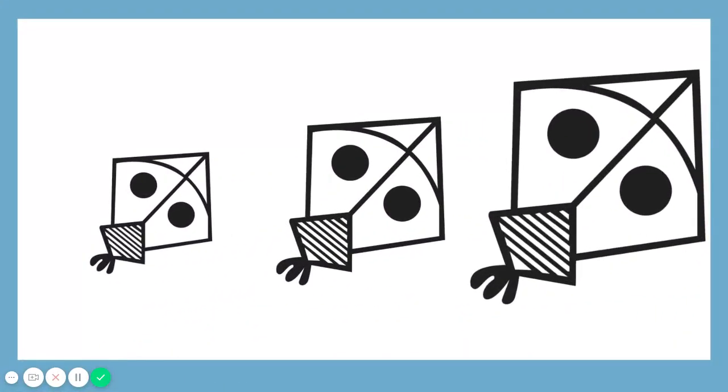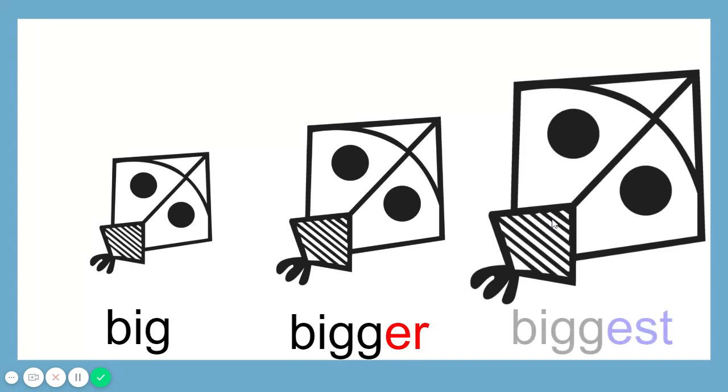I have here three kites. The first kite is big, the second kite is bigger, and the third kite is the biggest.